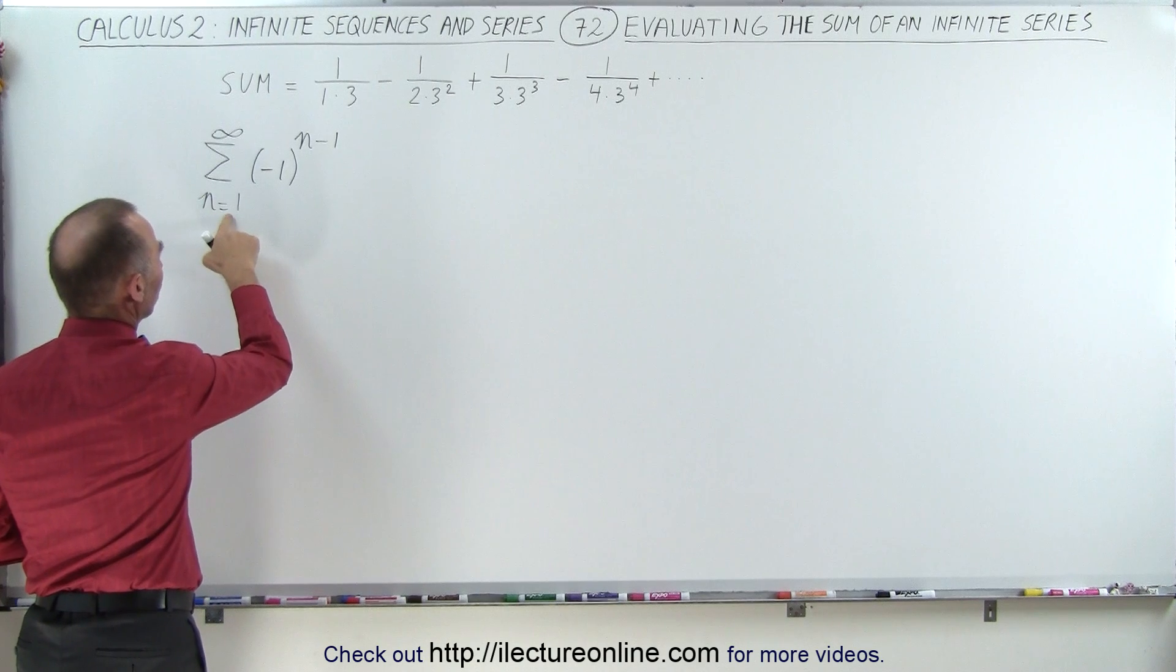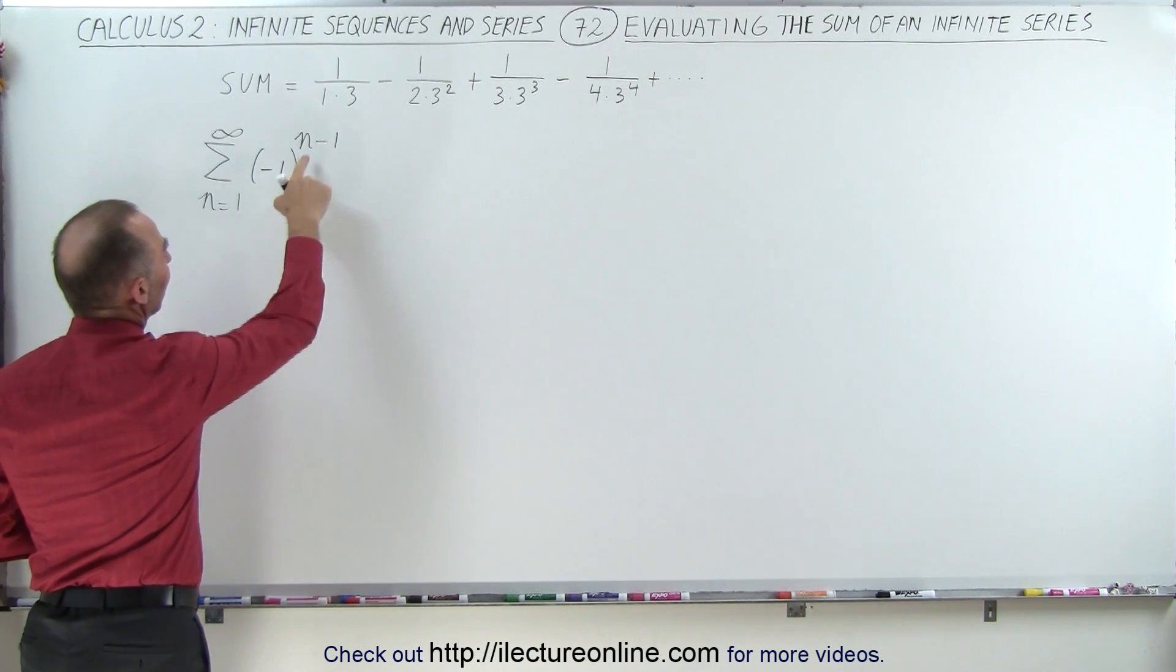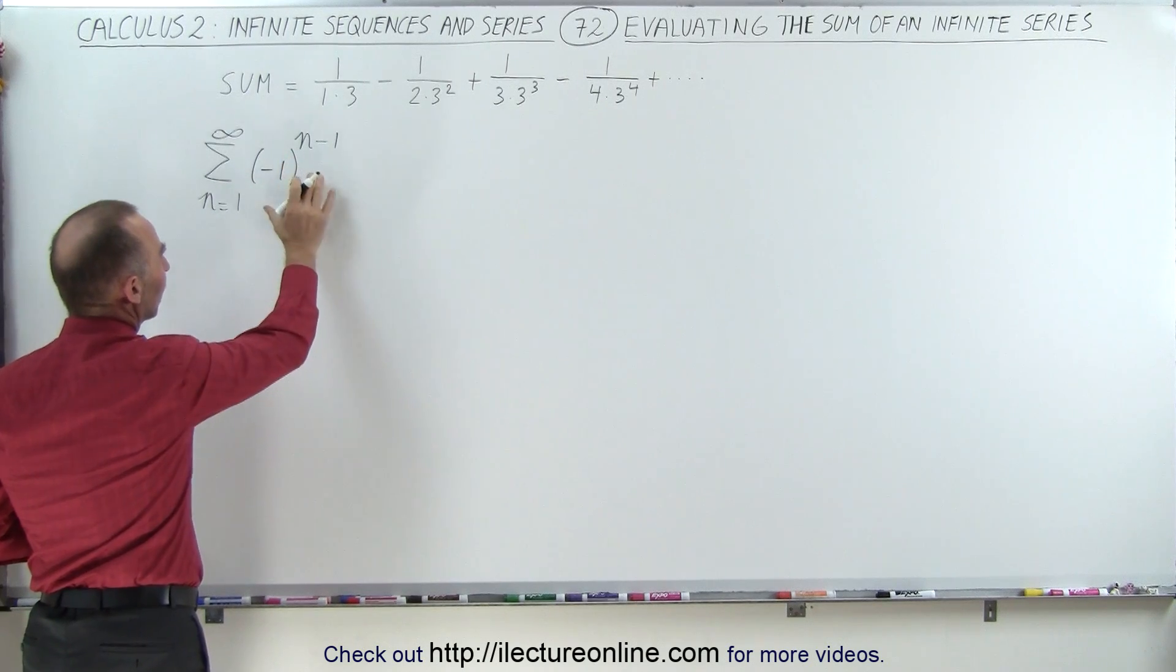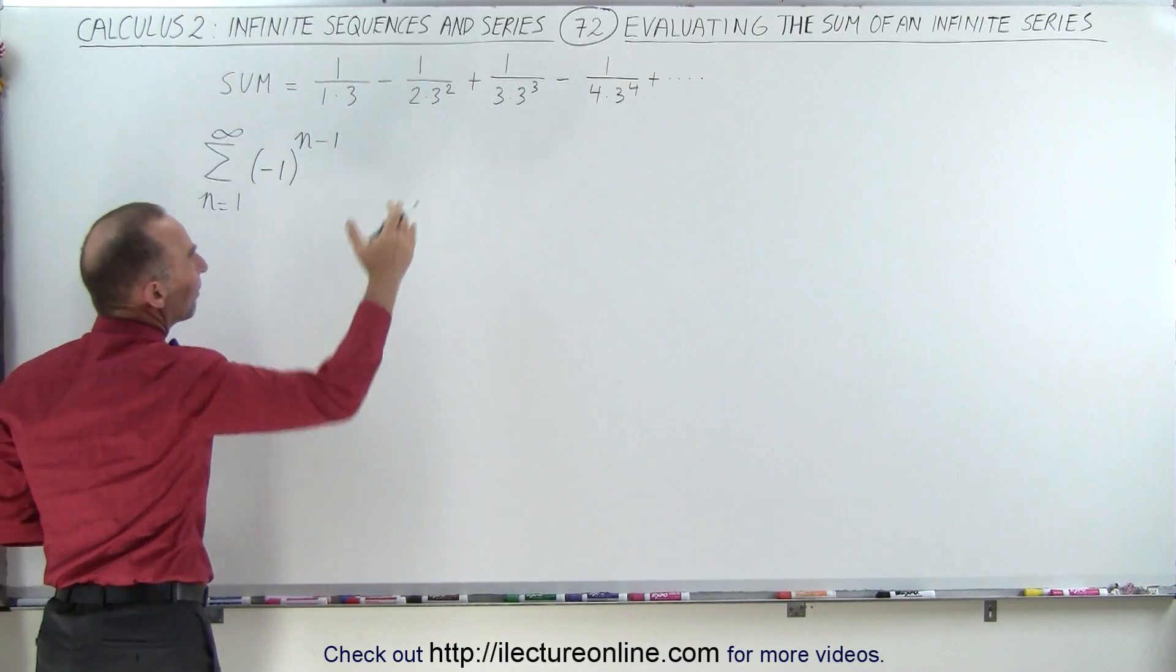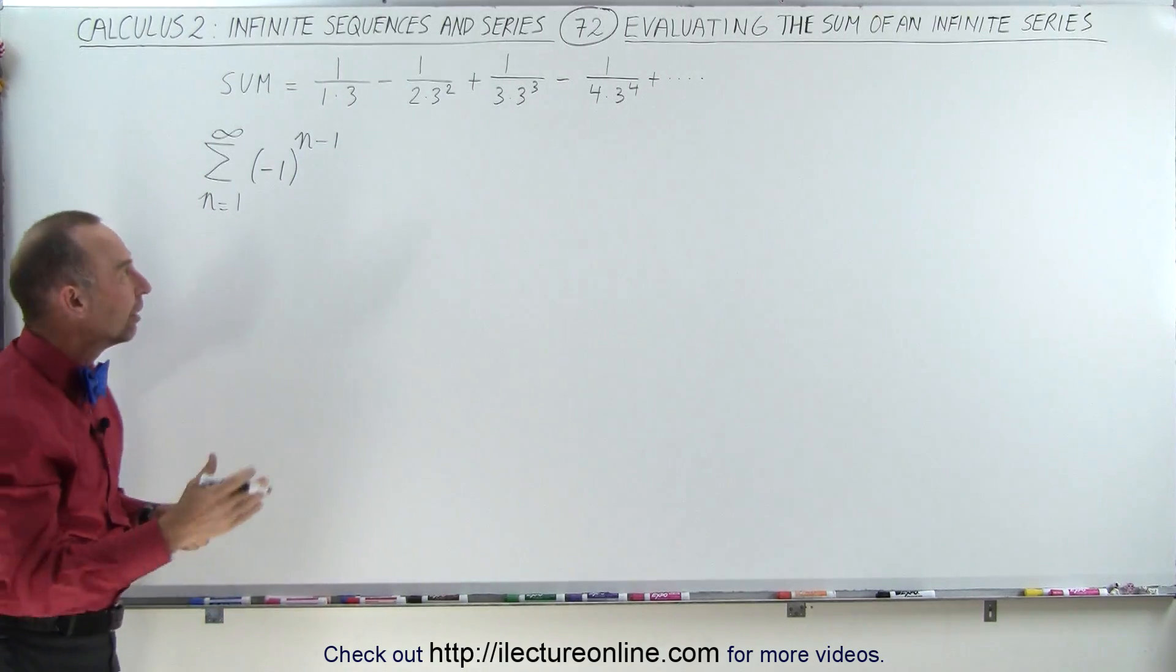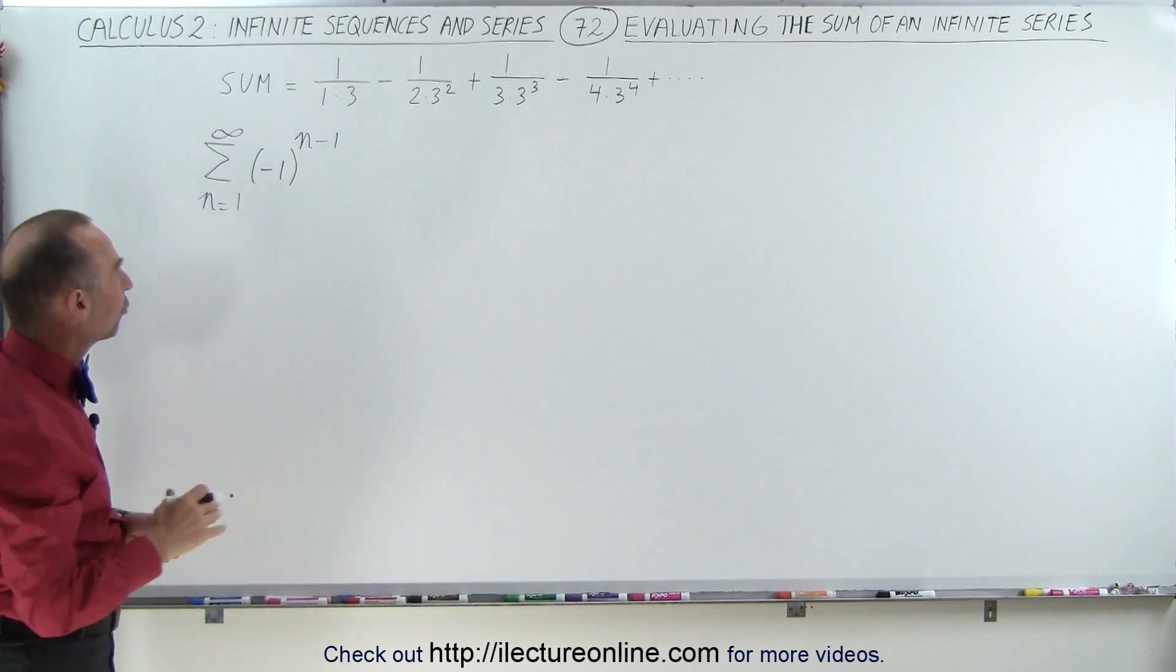So that means when n equals 1, which is the first value for n, 1 minus 1 is 0. Minus 1 to the 0 power is a plus 1, and so therefore we have the first term as being plus, and then every consecutive term will then alternate from plus to minus to plus and so forth.